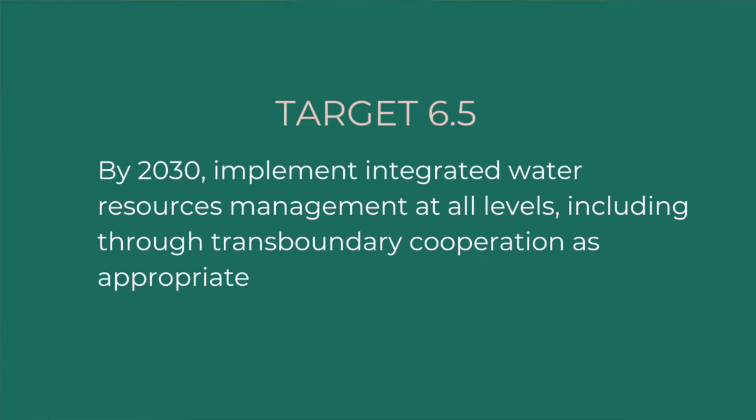Target 6.5: By 2030, implement integrated water resource management at all levels, including through trans-boundary cooperation, as appropriate. Many different sectors are dependent on water, and where water resources are limited, conflicts over its use often arise. Beyond just tension between various water user groups, most of the world's freshwater resources are trans-boundary — meaning they cross borders of multiple countries — which makes coordination and cooperation very challenging. In response to this, Target 6.5 aims to implement Integrated Water Resources Management, or IWRM, at all levels.